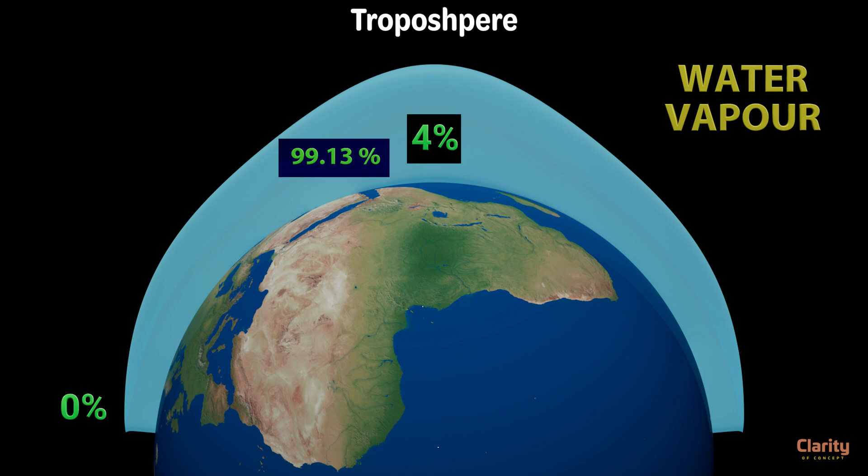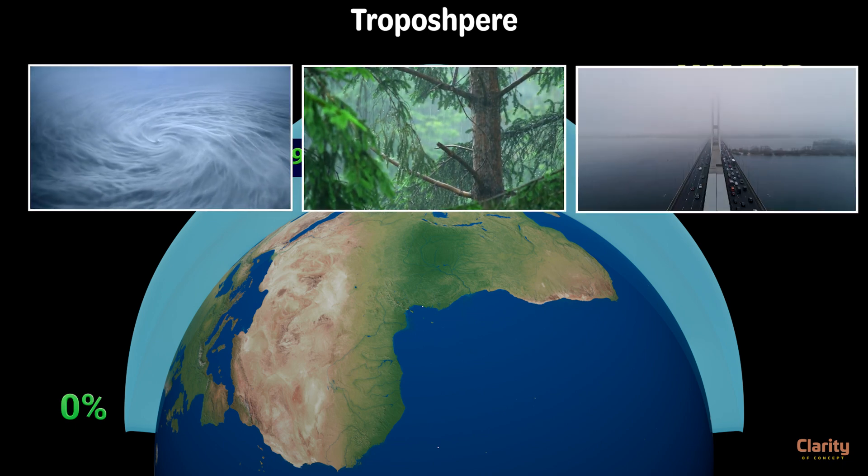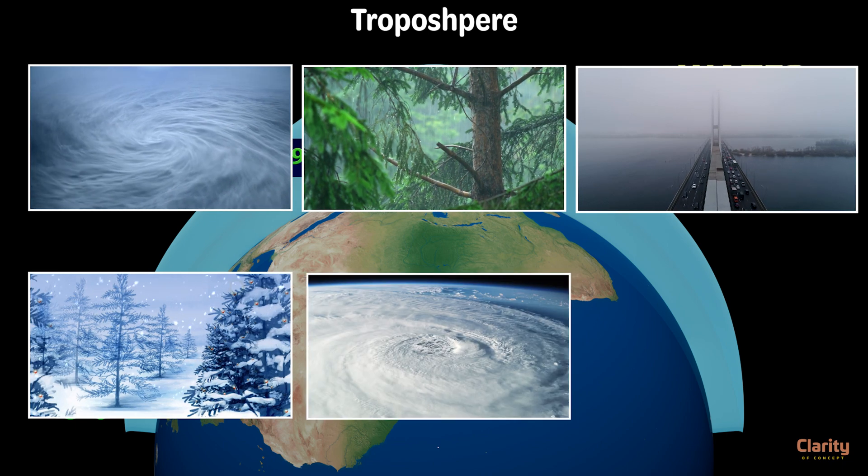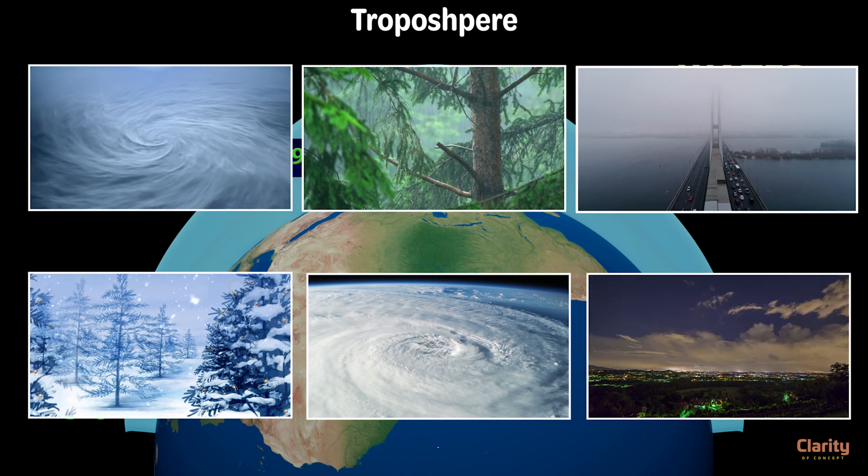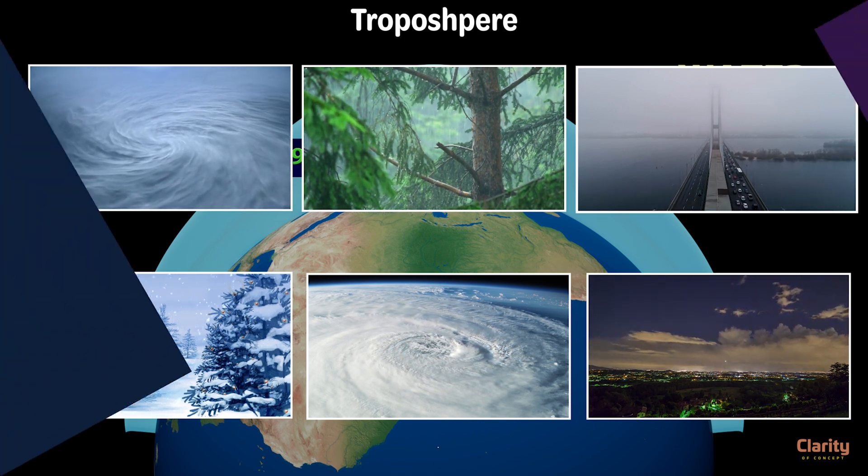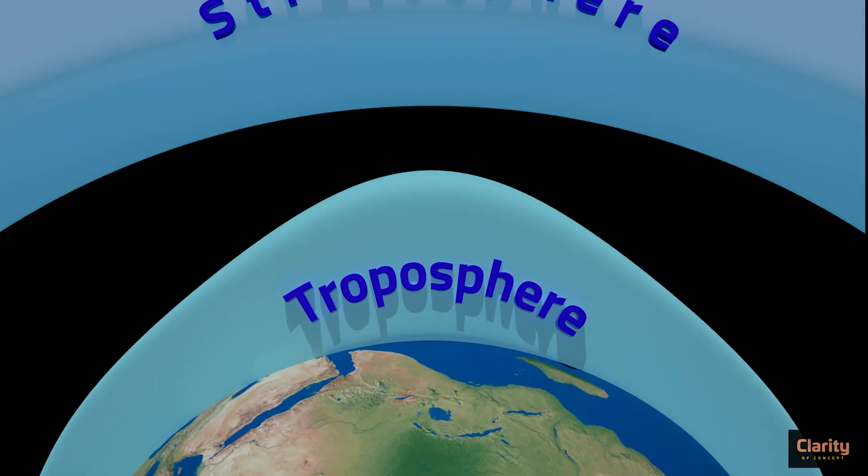Since water vapour is source of most weather events, all weather occurs in troposphere. Cyclones, rainfall, fog, snowfall, anticyclones, storms and all weather events take place only in troposphere. Although some violent storms cross troposphere and reach lower parts of next layer called stratosphere.